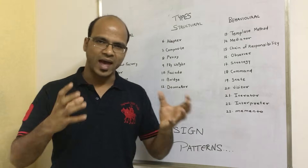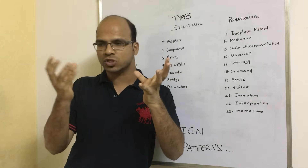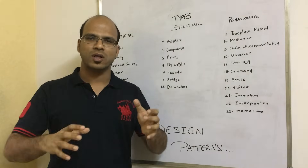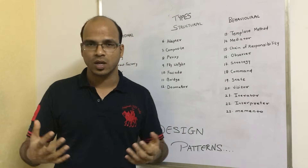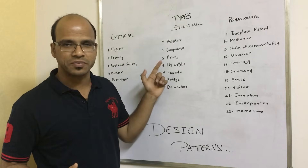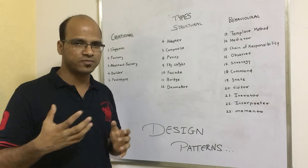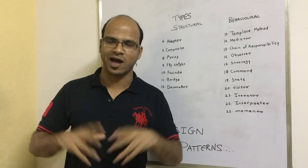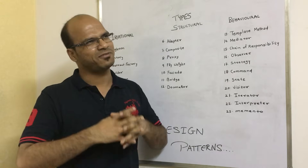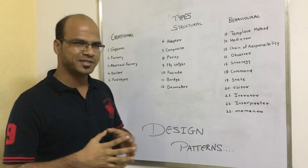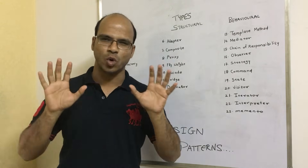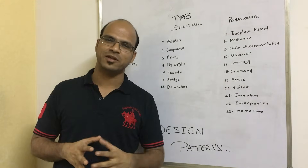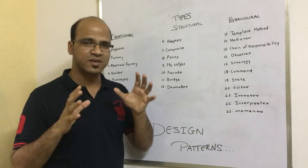The next category is structural design patterns. If you have two objects and you want to compose one inside the other, you use structural patterns. If you've worked on Android or Swing, you might know the Adapter design pattern. Another favorite is the Facade pattern. There are around six or seven structural design patterns in total.